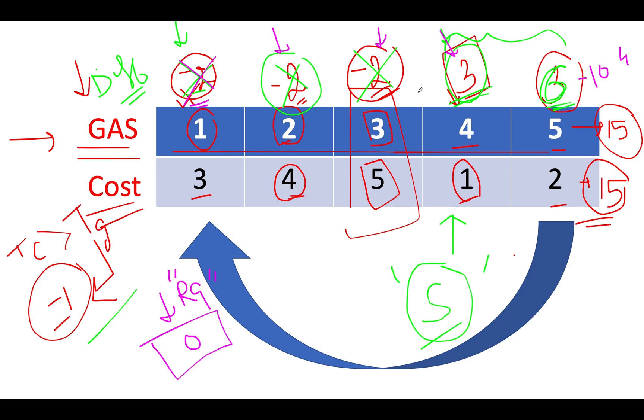Next we see is three. Three plus zero gives us three. So the remaining gas gets updated to three. Since it's greater than zero, it can be the starting point, which we also discussed. Let's proceed ahead.